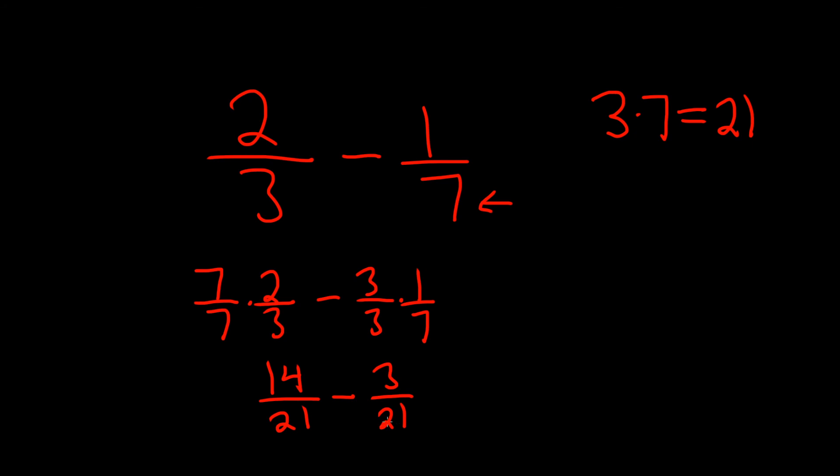So now they're both 21 on the bottom, so now you can just subtract the top part. So 14 minus 3 is equal to 11, and so you get 11 over 21. I hope this video has been helpful.